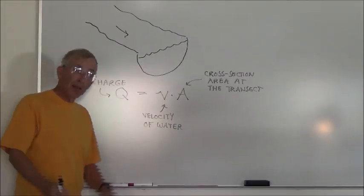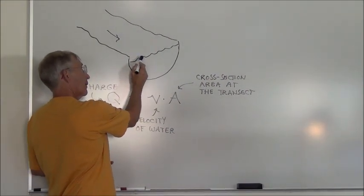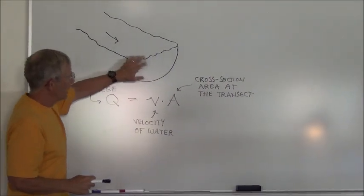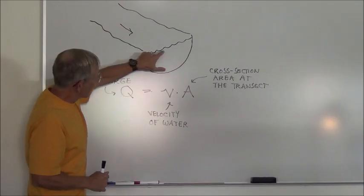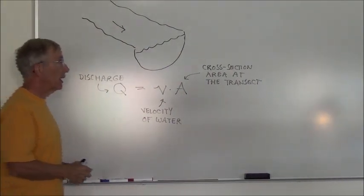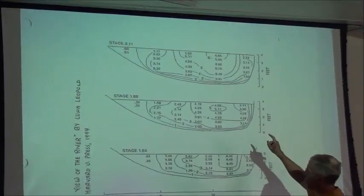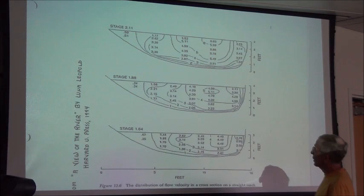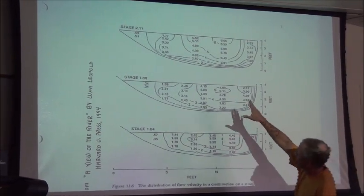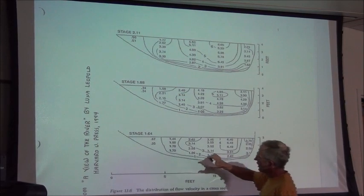There's a second dimension to that complication. Think about the water from the surface down to the stream bed — there's actually considerable variation in velocity in that dimension too. If you look on page 34 in the package of handouts for your lecture notes, these are transects from a real-life stream.